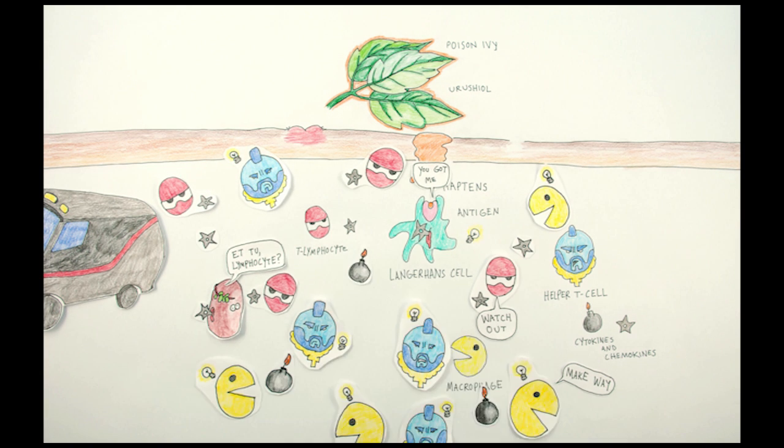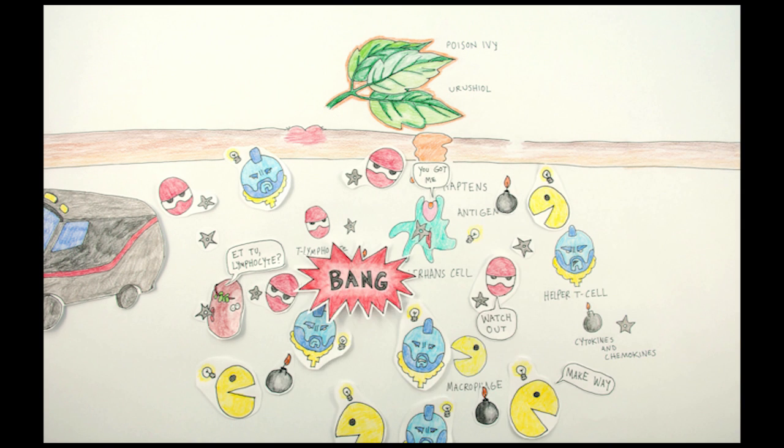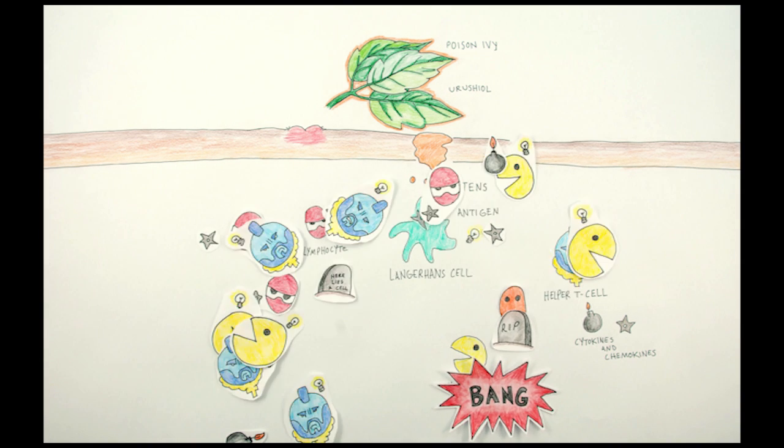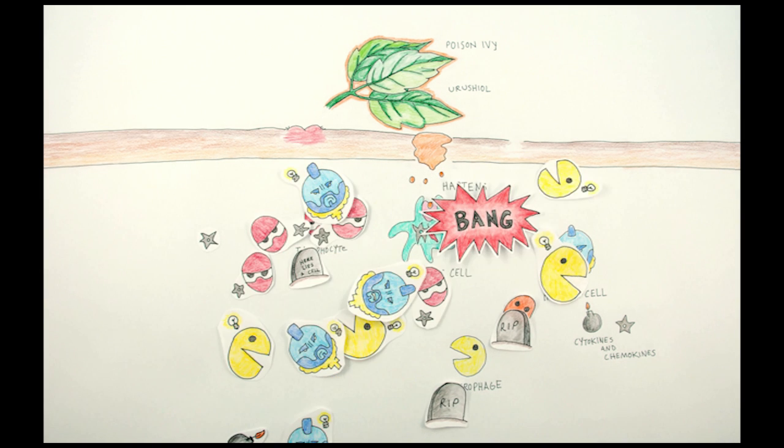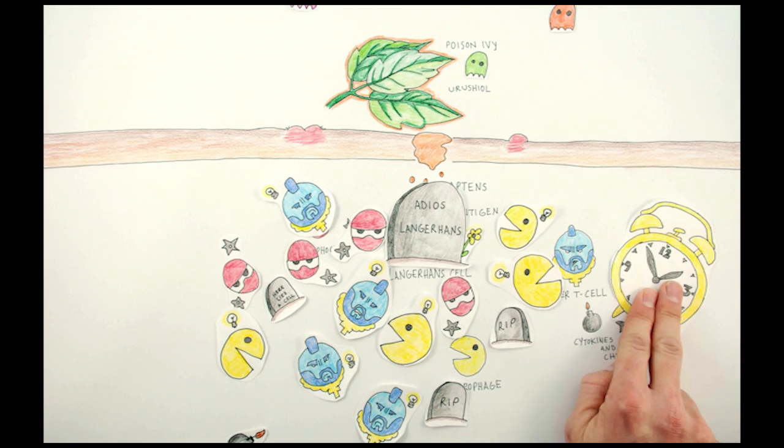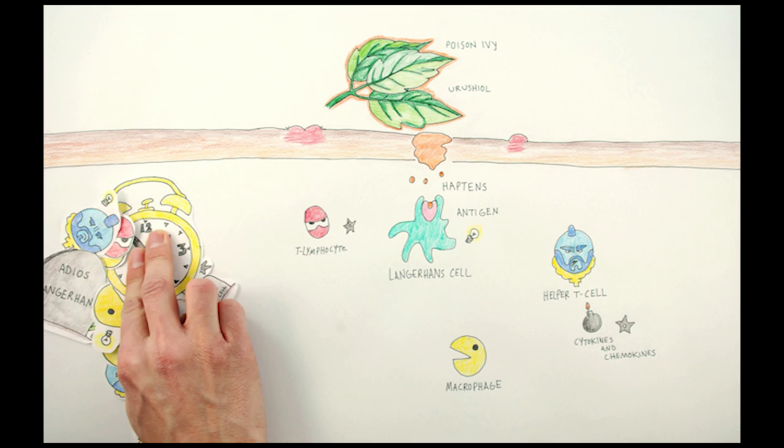Your reaction will depend on how susceptible you are to urushiol, how much oil has gotten into your skin, and how much you've been exposed to poison ivy in the past. The chain of events is complex and it takes time. In fact, it could be 48 hours before you develop an itchy rash and blisters.